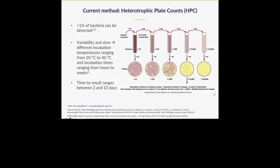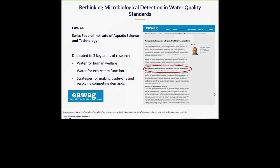EAWAG, which is part of the Swiss Federal Institute of Aquatic Science and Technology, is dedicated to three key areas of research: water for human welfare, water for ecosystem function, and strategies for making trade-offs and resolving competing demands. Specifically within the research group, Professor Thomas Egli in collaboration with Dr. Frederick Hemp are promoting the use of flow cytometry for the microbiological quality assessment of water resources and drinking water. While flow cytometry was originally used in medical routine analysis, it is now finding its way into quality control for drinking water and is a promising alternative to existing methods.